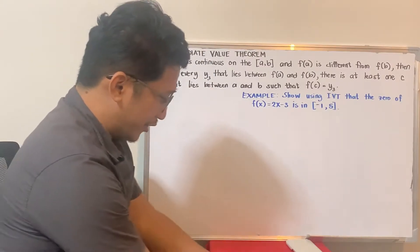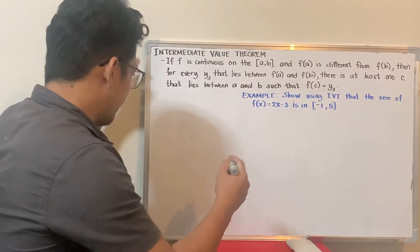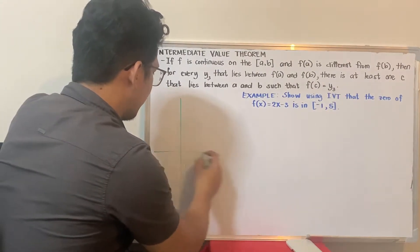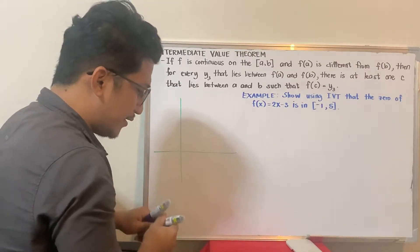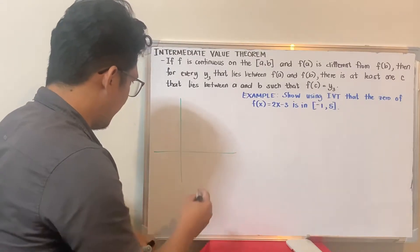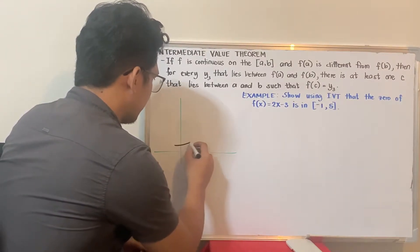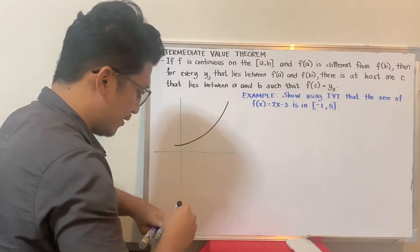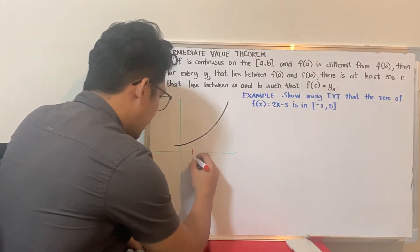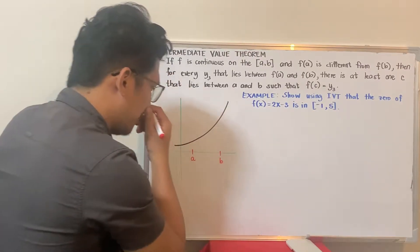Let me show an illustration. Assuming this is the x and y axis, and this is our function. Let's say here is a, and this is b.